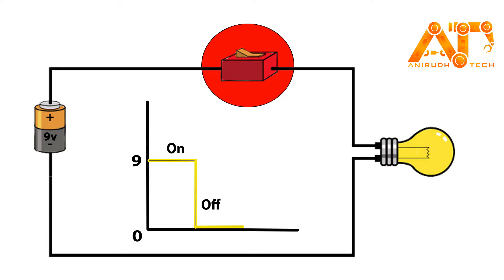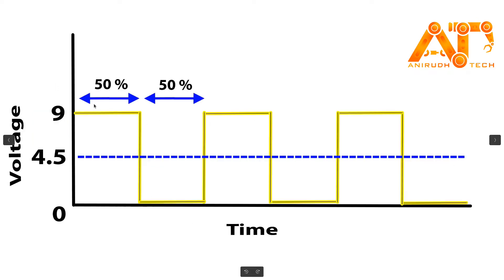If we turn it on for 50 percent of the time and turn it off for 50 percent of the time, then our average voltage will be 4.5 volts — it is decreased to 4.5 volts. This is the pulse width, and by changing its width we can control the brightness of our bulb.